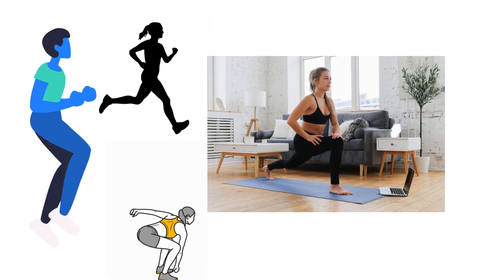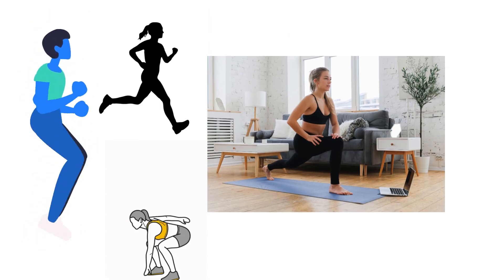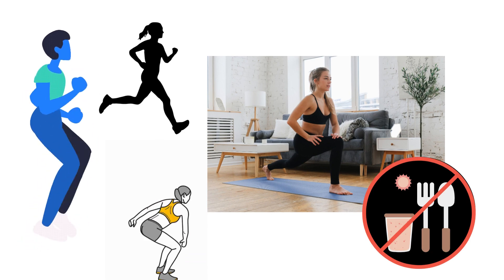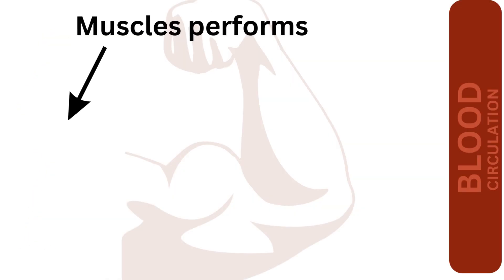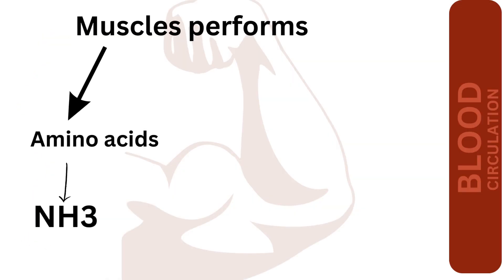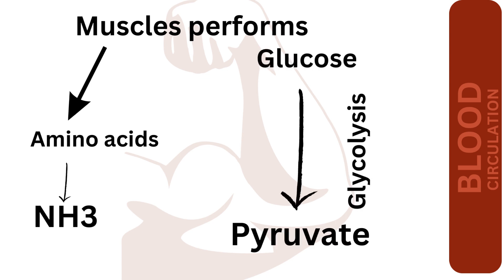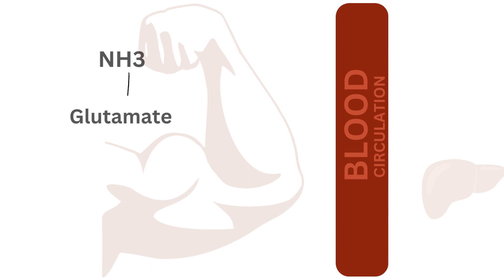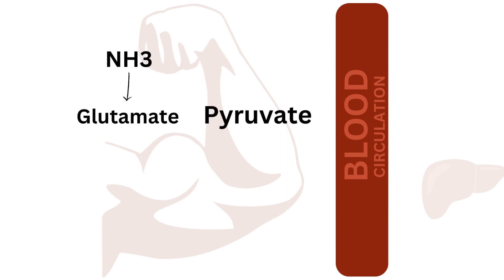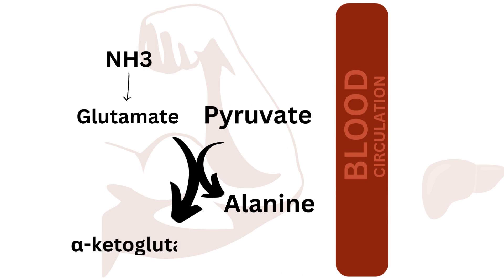During intense exercise or prolonged fasting, muscle tissues break down amino acids, releasing ammonia. Meanwhile, pyruvate is produced by the glycolysis process. Then, ammonia from glutamate combines with pyruvate to form alanine, a non-toxic amino acid, by a transamination reaction.